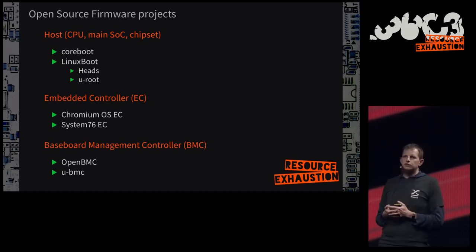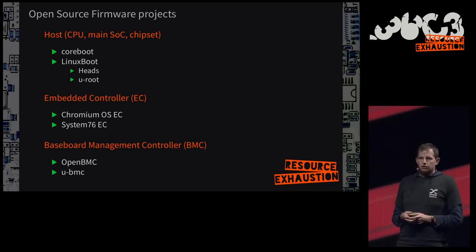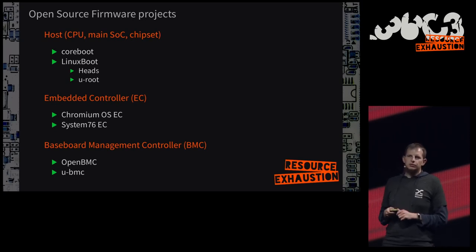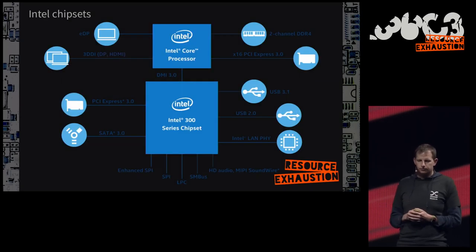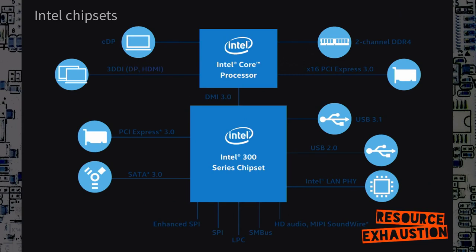But that's not what I'm talking about today — I'm talking about something else. That's why we have to take a closer look at Intel's x86 hardware. This is an example of a platform with a dedicated chipset and processor — another graphic I borrowed from Intel. It shows where all the peripherals are connected: USB, Ethernet, and more. The chipset is quite a large box, and there's a reason for it — that's where most chips connect. That's why Intel calls it the Platform Controller Hub, or PCH for short.